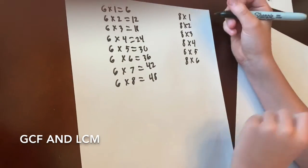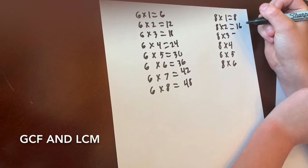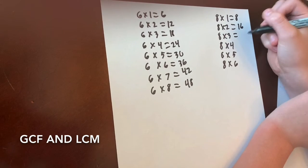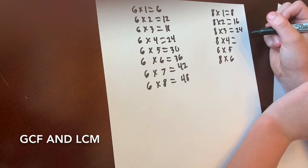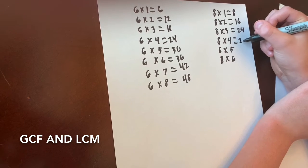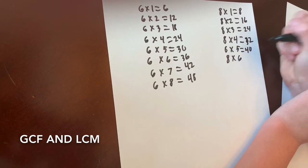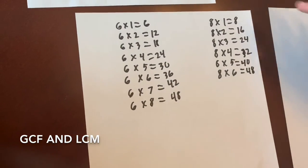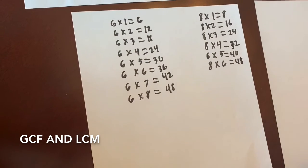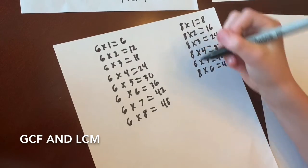Now we're going to do the 8's. 8 times 1 is 8, 8 times 2 is 16, 8 times 3 is 24, 8 times 4 is 32, 8 times 5 is 40, and 8 times 6 is 48. So to find the least common multiple, if they share the same number, the lowest one would be it. So the lowest one here would be 24, so your least common multiple is 24.